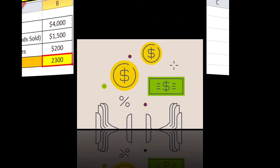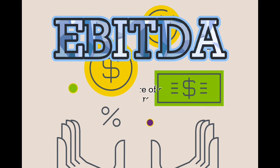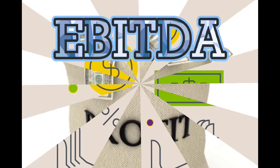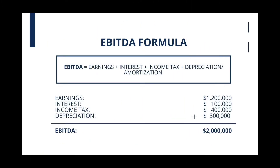Next is the EBITDA, or the Earnings Before Interest, Taxes, Depreciation, and Amortization. EBITDA is a measure of a company's operating profit as a percentage of its revenue. Knowing the EBITDA margin allows for a comparison of one company's real performance to others in its industry. Calculating a company's EBITDA margin is helpful when gauging the effectiveness of a company's cost-cutting efforts. The higher a company's EBITDA margin, the lower its operating expenses are in relation to total revenue.